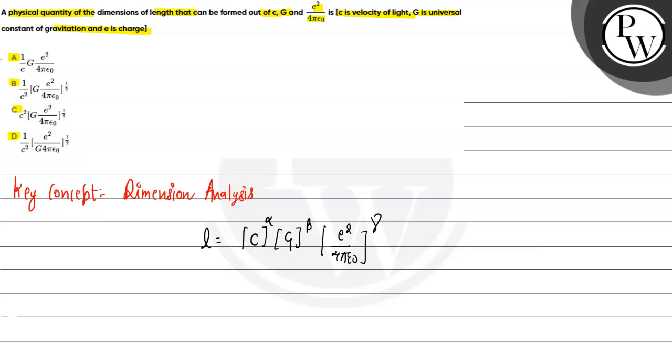You can write the relation: the length dimension is M⁰L¹T⁰. C is velocity, the velocity dimension is LT⁻¹.